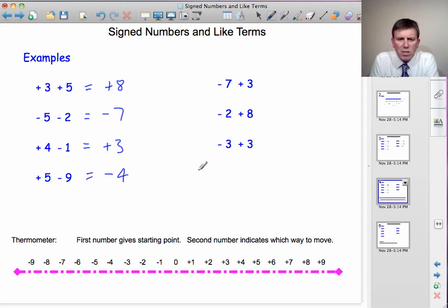Minus 7 plus 3. Start at minus 7. Add on 3. 1, 2, 3, and we get to minus 4.